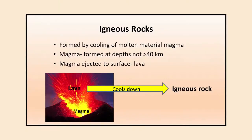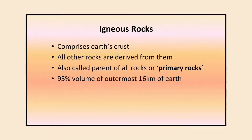Igneous rocks are formed by cooling of molten material called magma. When magma is deep-seated inside the Earth it is known as magma, and when it comes out of the Earth's surface it is known as lava. Lava cools down and forms igneous rocks. Magma is formed around 40 kilometers deep inside the Earth. Igneous rocks comprise mainly the Earth's surface — all other rocks are derived from them — therefore igneous rocks are also known as parent rocks or primary rocks. 95% of the outermost 16 kilometers of the Earth is made up of igneous rocks.